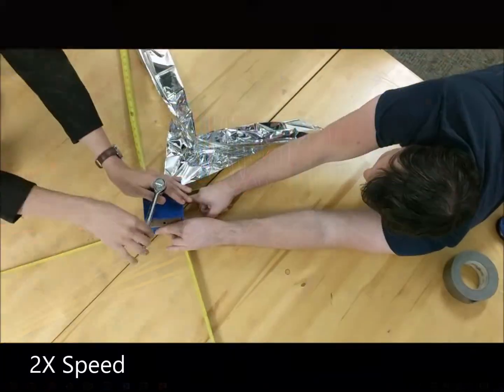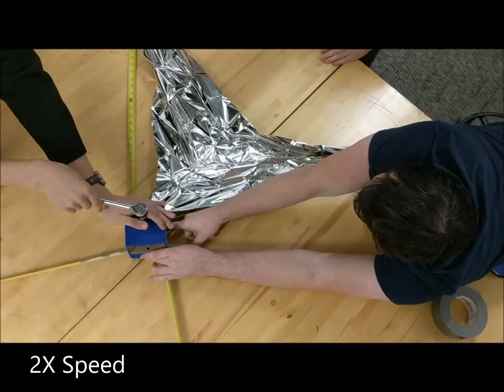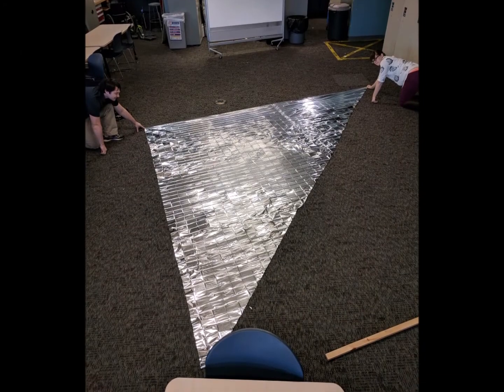The basic idea is to unfurl a large reflective sheet from a small satellite that can reflect the sun's rays for fuelless propulsion.